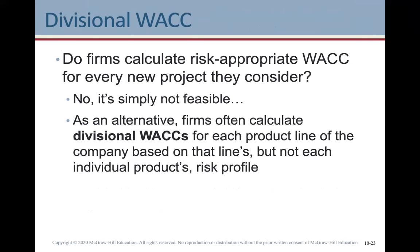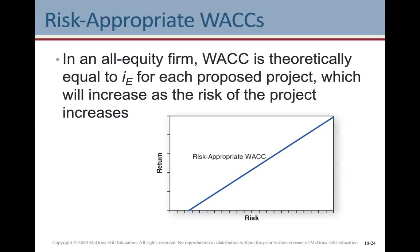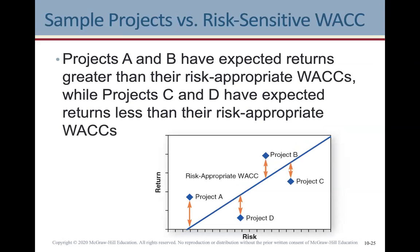Some companies have multiple divisions that can be somewhat different. Firms don't calculate risk-appropriate WACCs for every single new project because it wouldn't be feasible. Instead, firms will often calculate divisional WACCs for a product line based on that line's risk profile. They'll look at a division and determine the WACC for that particular division and product line. In an all-equity firm, WACC is theoretically equal to the cost of equity for each proposed project and will increase as the risk of the project increases.